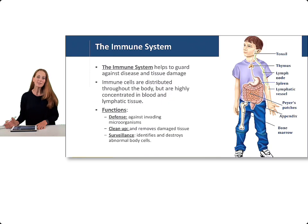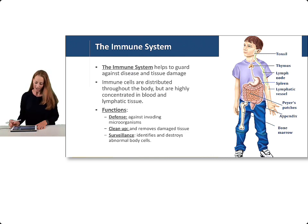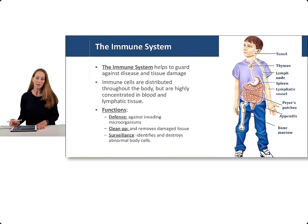The immune system helps to guard against disease and tissue damage. It defends against invading microorganisms, helps to clean up and remove damaged tissue, and identifies and destroys abnormal body cells. Immune cells are found throughout the body but are highly concentrated in the lymphoid tissues and in the blood.